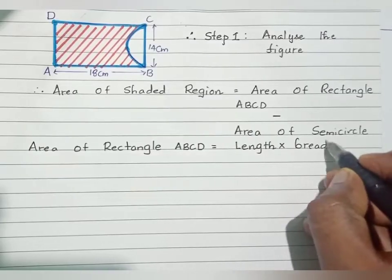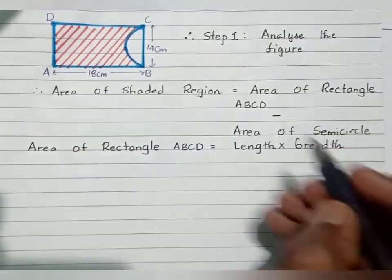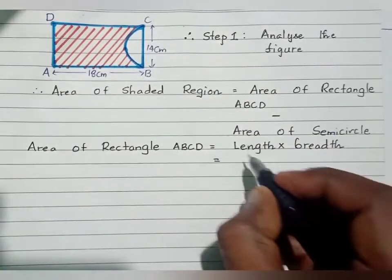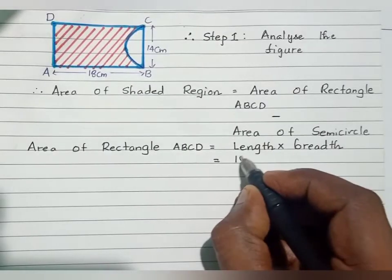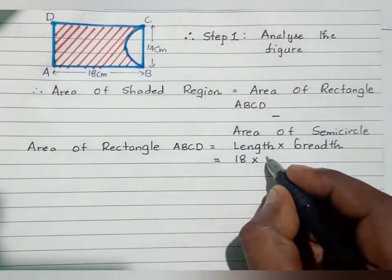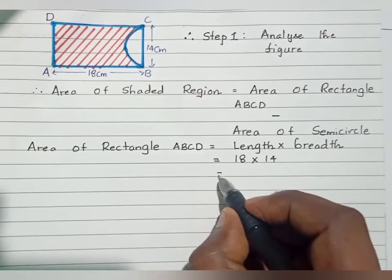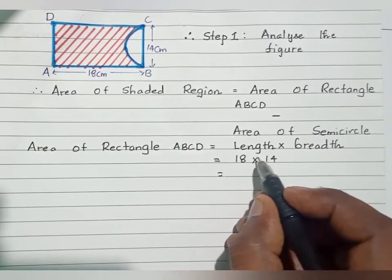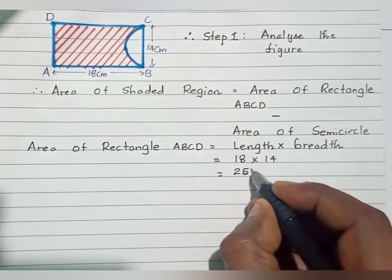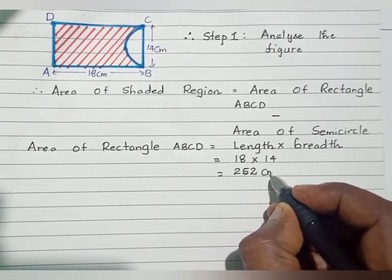Length is 18 centimeter, breadth is 14 centimeter. Therefore 18 into 14 gives you 252 centimeter square.